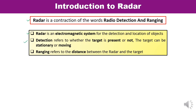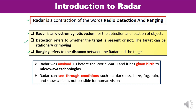Detection refers to whether the target is present or not. The nature of the target may be stationary or moving, depending upon how the target is moving — it may be moving towards the source or away from the source. Various natures of objects or targets may also be available. The term 'ranging' refers to the distance between the radar and the target, which is the range to the target.